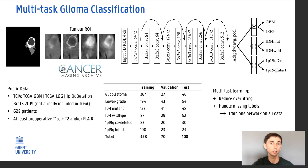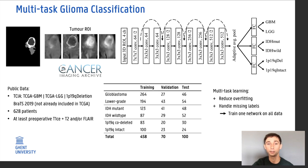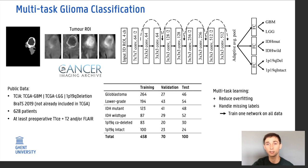We opted for a multi-task learning approach as the three tasks are very much related. Features learned for one task are appropriate for the other tasks as well, so this helps to reduce overfitting. Moreover, IDH status and 1P19Q co-deletion is not known for all patients, so we have quite some missing labels, and multi-task learning allows us to train one neural network on all data instead of training separate networks for each task on a smaller dataset.